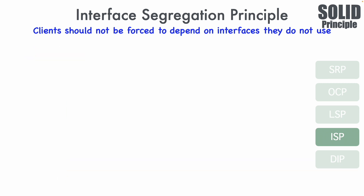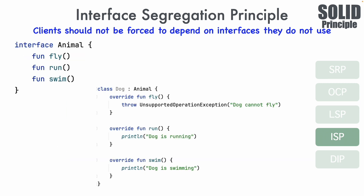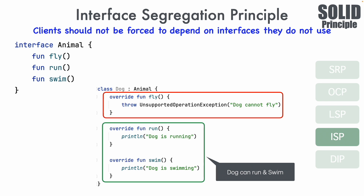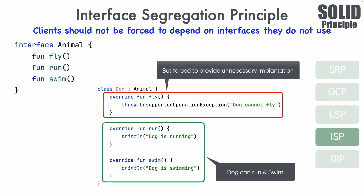Let's take another example. You have an interface called Animal which tries to do too many things: fly, run, and swim. A class called Dog implements Animal. Dog can run and swim, so that's fine. The problem is when you try to make it fly — we are forced to implement that function because we implement the Animal interface, which violates ISP.